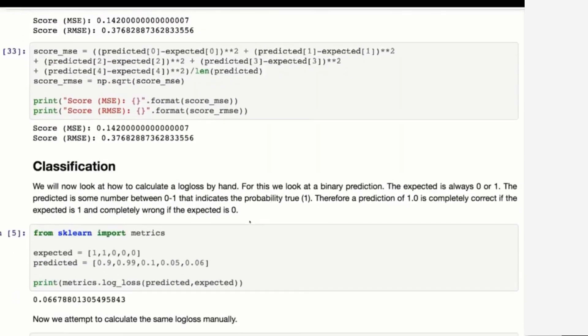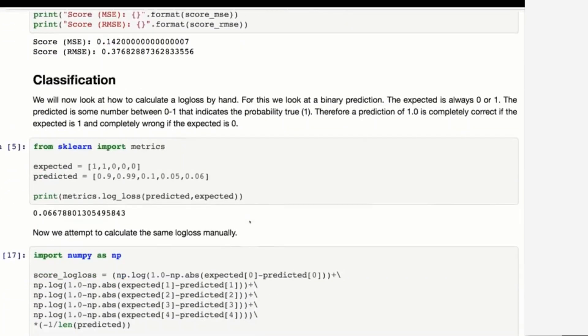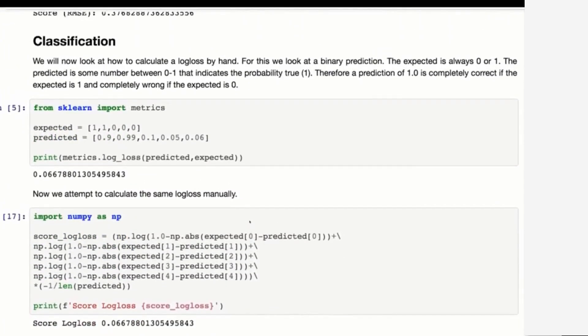For classification, we're doing a similar sort of thing except we're using the log loss. You can see at the top how you have the expected and the predicted and how you can literally calculate each piece of the log loss and sum them together getting the exact same value as you would have gotten from the built-in function.